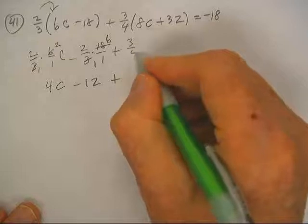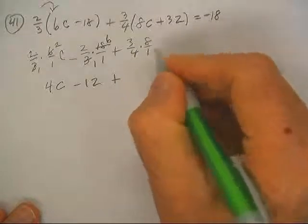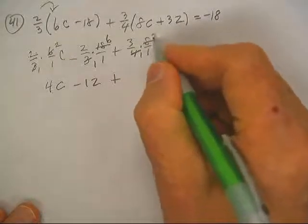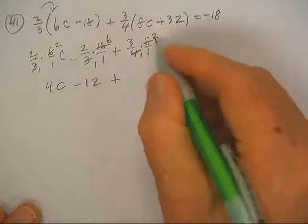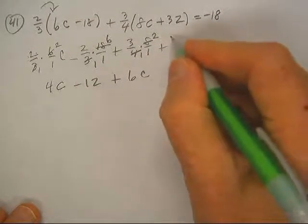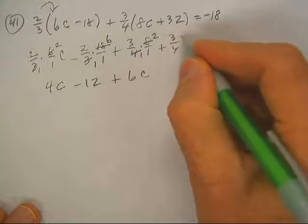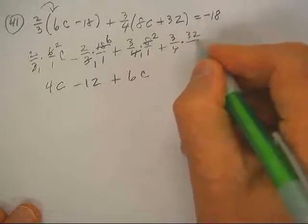Here I've got 3-fourths of 8 over 1. 4 goes into 8 twice, 2 times 3 is 6, plus 3-fourths times 32 over 1.